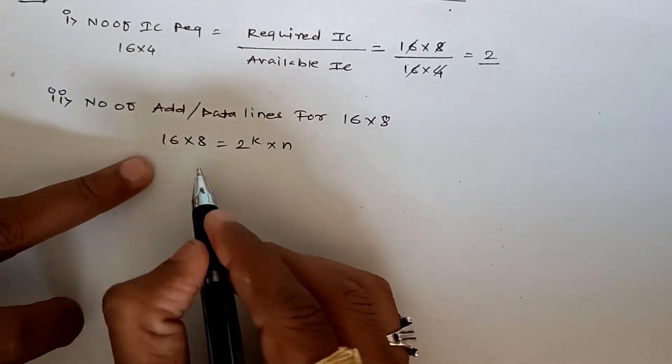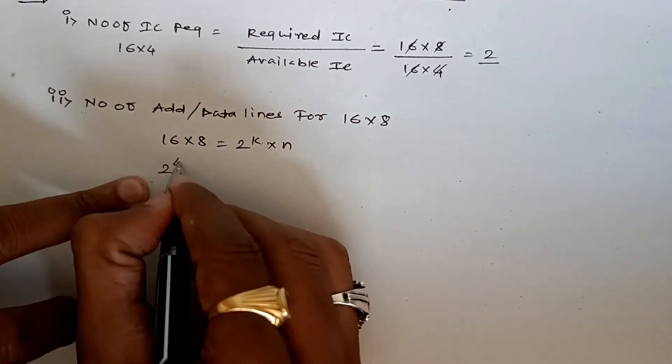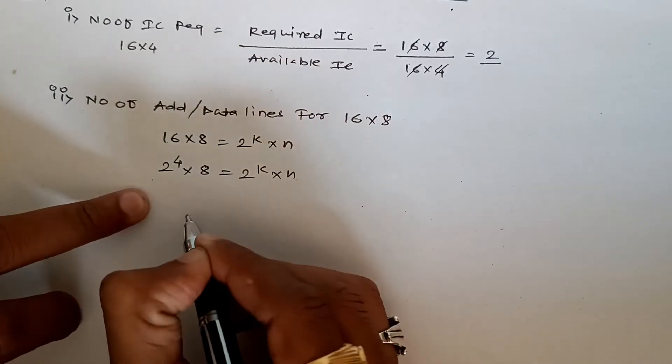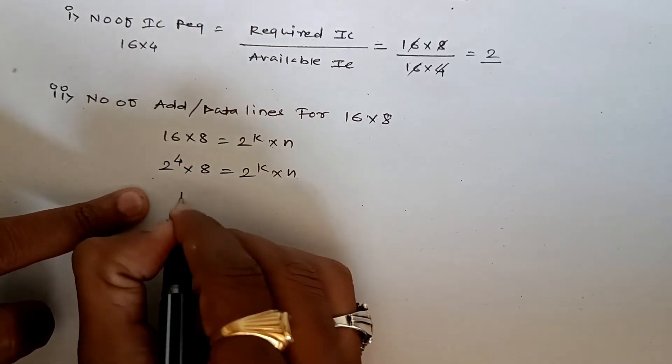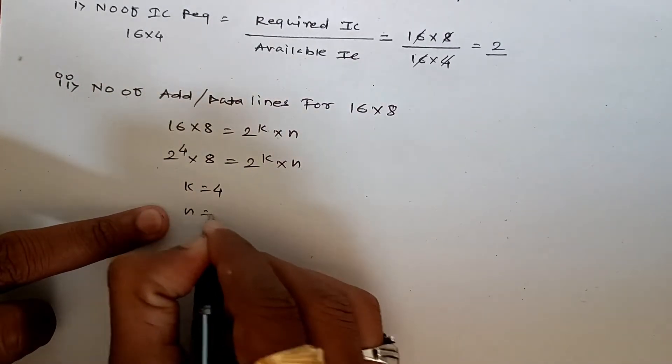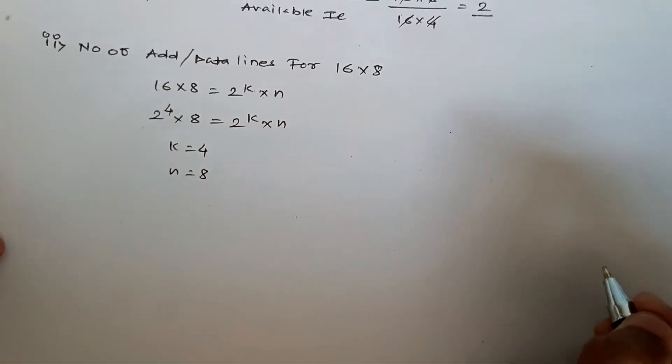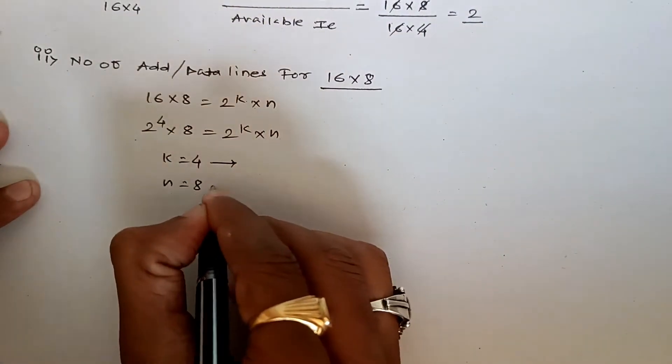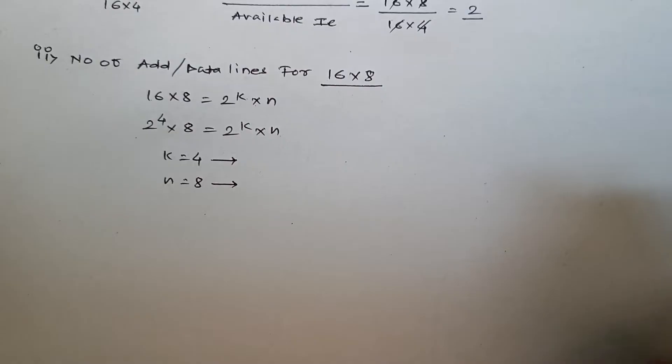We'll write 16 as 2 to the power 4, so it's 2^4 by 8. Comparing both sides, we get k=4 and n=8. So for the 16 by 8 IC we need 4 address lines and 8 data lines.